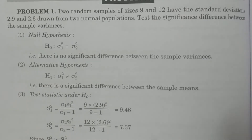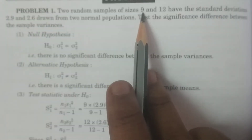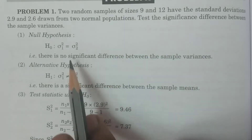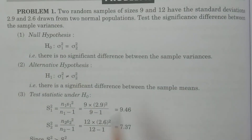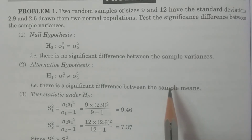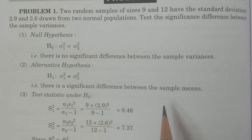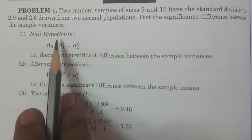So it is an F test. Also, you have to see whether the sample sizes are less than or equal to 30. Here the sizes are 9 and 12, so N1 is equal to 9 and N2 is equal to 12. Therefore, we can conduct an F test for equality of variances. To test the significance difference between variances, we use the F test.